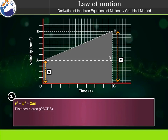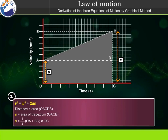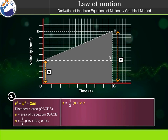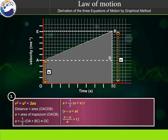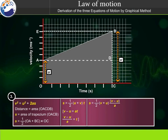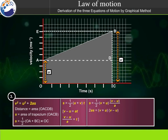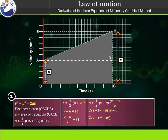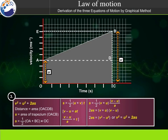Distance also equals area of trapezium OACB, so s equals half times (OA plus BC) times OC, giving s equals half times (u plus v) times t. Since v minus u equals at, substituting t equals (v minus u) divided by a, we get 2as equals (v plus u)(v minus u), therefore v squared equals u squared plus 2as.